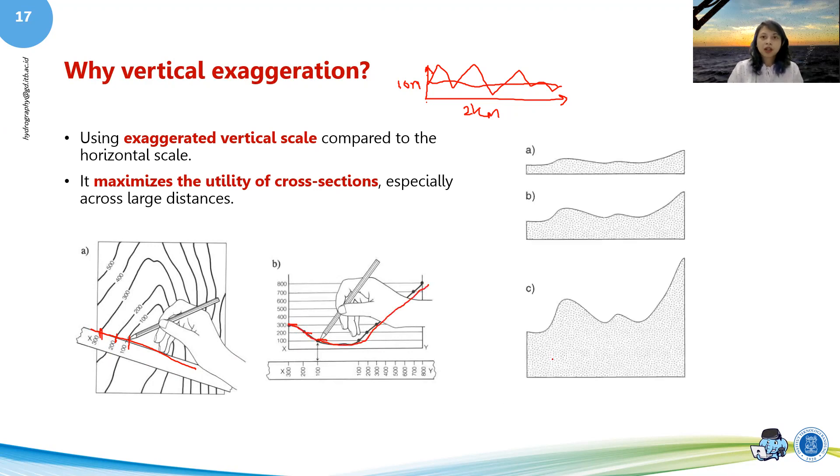And the cross profile itself, again, there are levels of exaggeration. For example, this one is when the vertical exaggeration is only one. So the horizontal scale mimics the vertical scale.